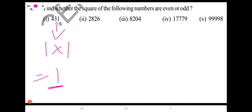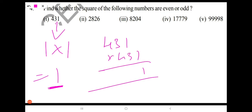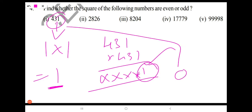From this we can say directly the square of 431 ends with 1. It means the square of 431 contains 1 in its units place. Since 1 is an odd digit, the square of 431 is an odd number. I hope you understand this.